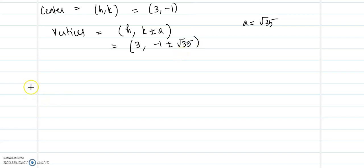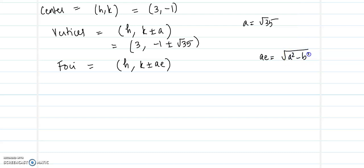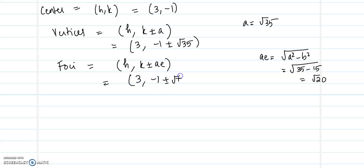The foci are given by (h, k plus or minus c), where c equals the square root of a squared minus b squared, so root of 35 minus 15, which equals root 20. So the foci are at (3, minus 1 plus or minus root 20). Those are the foci and vertices.